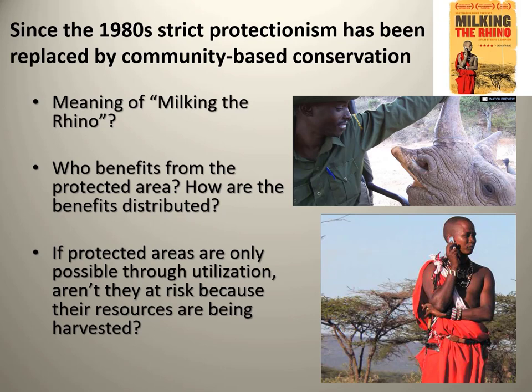That's one way to look at the meaning of Milking the Rhino — instead of traditionally milking cattle as pastoral groups did. Two other things to keep in mind: who actually benefits from the protected area? If the goal of community-based conservation is to involve the local community and couple social justice with environmental conservation, is that actually being achieved? How are those benefits distributed? There are some examples where CBC is quite successful, and others where it absolutely is not — and there's nothing community-based about it other than the word in the proposal that got funding.